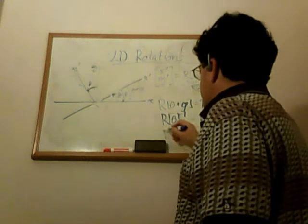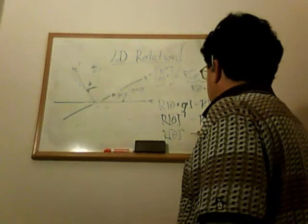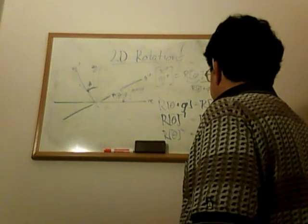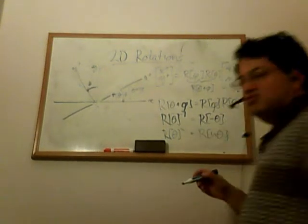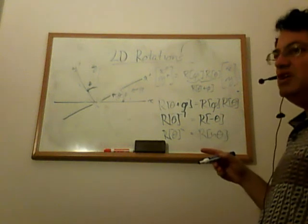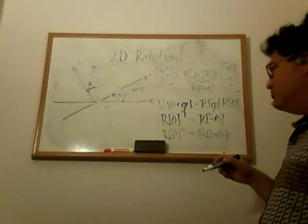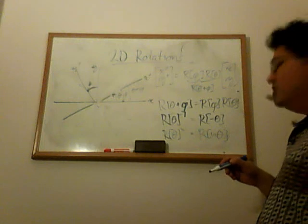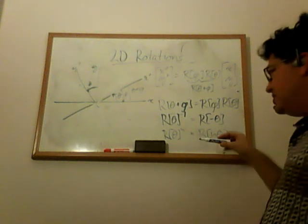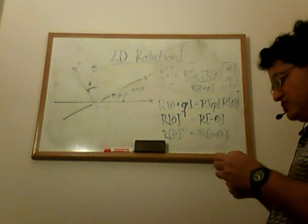The other nice identity is R of theta to the N equals R of N theta. The reason this is true is that if we do N rotations by an angle theta — where N is just an integer — that's equivalent to rotating once by an angle N theta.